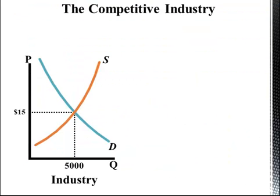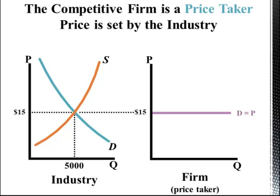The perfectly competitive industry is simply a supply and demand graph. Recall that competitive firms are price takers. As price takers, the price is the same at all quantities demanded, so the demand curve for each firm is perfectly elastic — a horizontal straight line — and the demand line equals the price of the good.